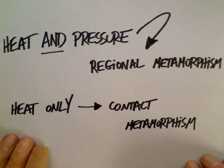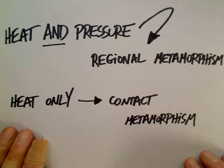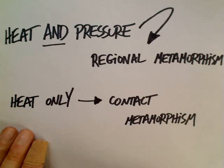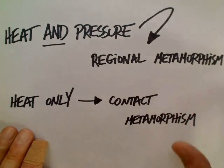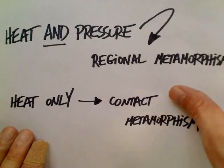Some rocks have heat only and not so much pressure, so they're not buried that deep — that's contact metamorphism. Think about if you have a big amount of lava nearby with a lot of heat that either touches rock or comes near rock: it adds a lot of heat but not a lot of pressure. You get contact metamorphism, and you get a metamorphic rock, but you don't often see the layers.